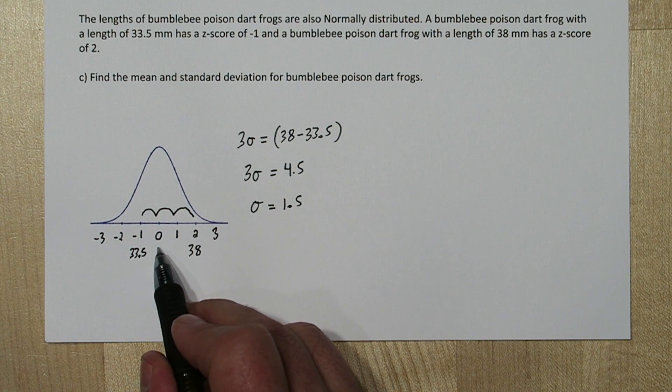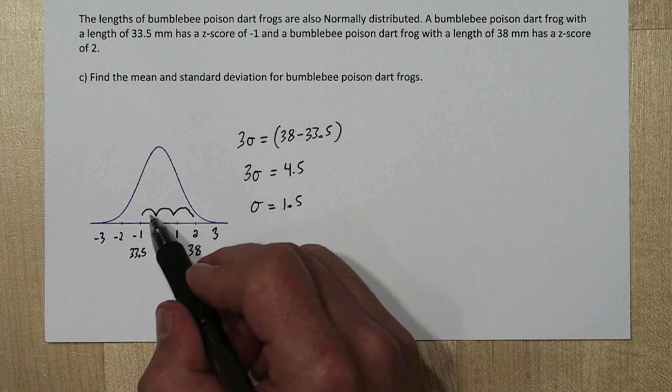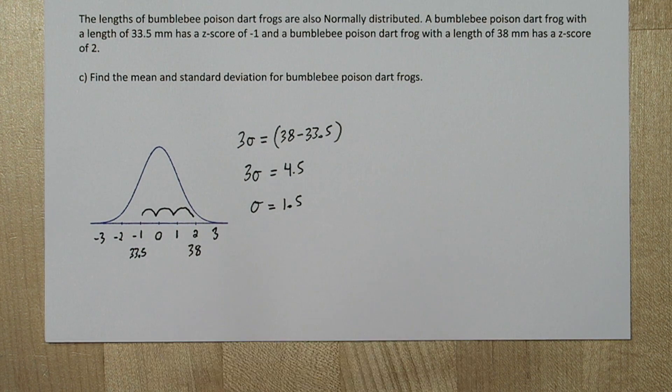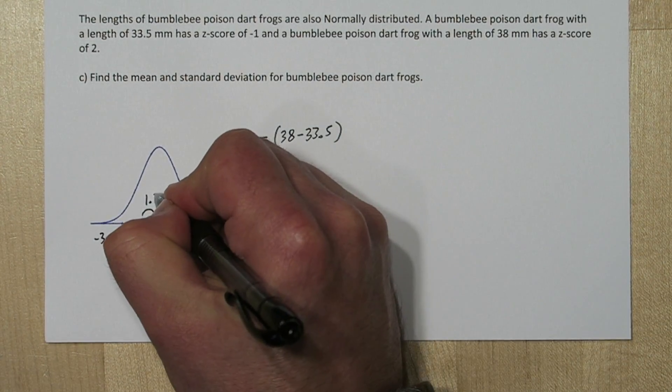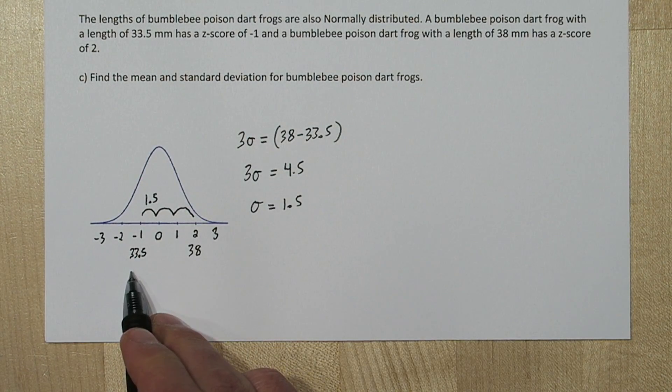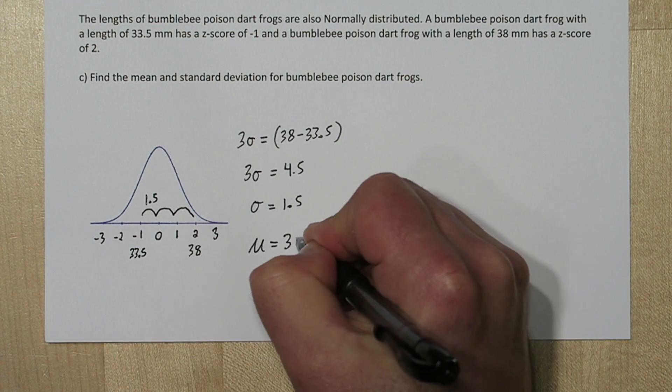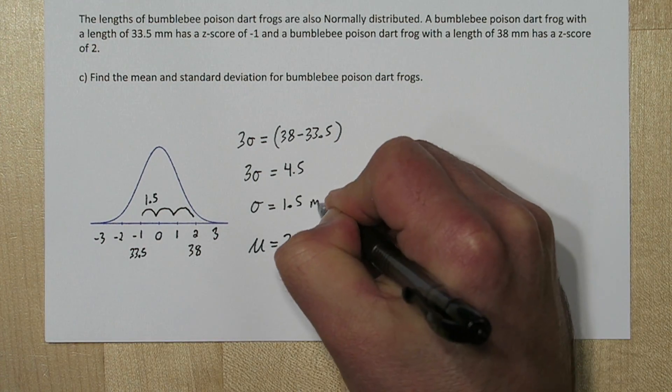Now the mean is right in the middle and corresponds with the z-score of 0. So right here at 33.5, if we just go one more standard deviation, we're going to be at the mean. So if we add 1.5 to our 33.5, we get our mean, 35 millimeters.